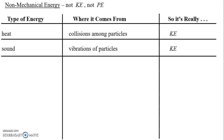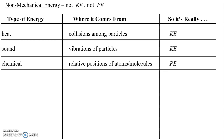Another type of non-mechanical energy is chemical — the type of energy you get from food. Where does it really come from? It comes from the relative positions of atoms and molecules. There's energy stored in the bonds between atoms and molecules, and when you ingest and digest food, you're breaking those bonds and releasing the stored-up energy. When we talk about position and stored energy, that sounds like potential energy — but again, it's at the microscopic level, so it's a non-mechanical form of energy.